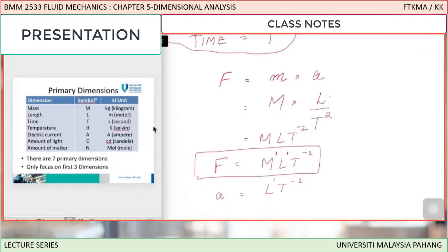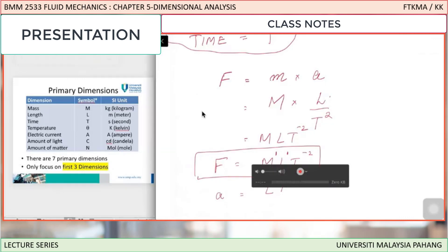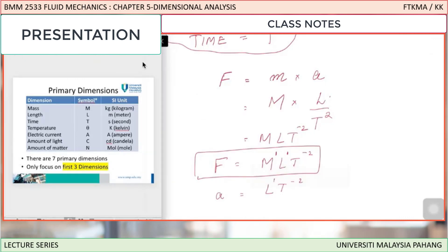There are seven primary dimensions. Mass, length, time are M, L, T. Temperature is denoted by theta, current by amperes, amount of light is candela (cd), and amount of matter is N or mole. But in this course we are going to learn only the first three dimensions.